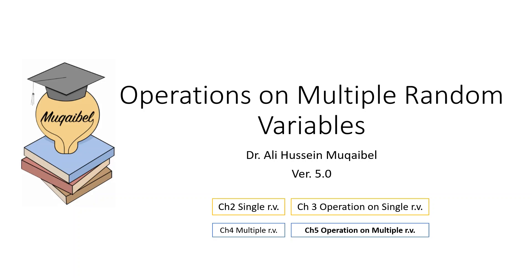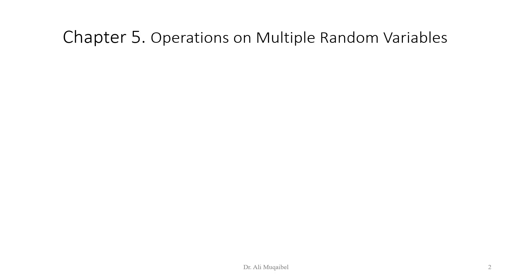Today's lecture is about operations on multiple random variables. We have already covered single random variables and operations on random variables. Now that we have just finished multiple random variables, we'll go on to operations of multiple random variables. Here is a list of the topics that we are going to cover under operations on multiple random variables.